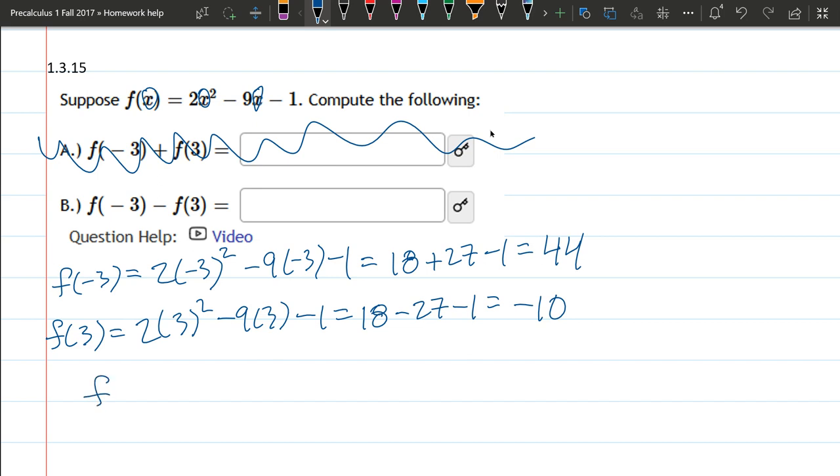All right, so what we're actually asked to do, f of negative 3 minus f of regular 3, and we have f of negative 3 is 44 minus f of regular 3 is minus 10. And we should use another parentheses. So we have 44 minus negative 10, which is the same as 44 plus 10, also known as 54.